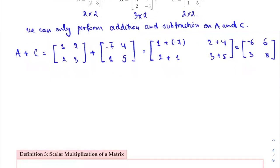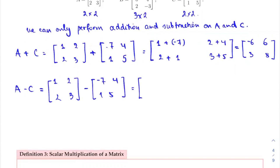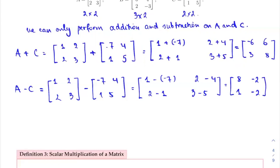Next is matrix subtraction. A minus C: [1, 2; 2, 3] minus [negative 7, 4; 1, 5]. Subtracting corresponding entries: 1 minus negative 7, 2 minus 4, 2 minus 1, and 3 minus 5. This gives: 8, negative 2, 1, negative 2.